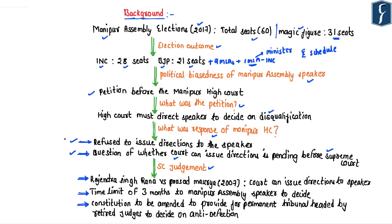Before the Supreme Court, there were two questions: first, whether courts in India can issue directions to the Speaker on anti-defection; and second, whether the MLA who switched from INC to BJP should be disqualified. On the first question, the Supreme Court stated it had already settled this in the Rajendra Singh Rana versus Prasad Maurya case, ruling that courts can issue directions to the Speaker when there is undue delay in deciding on disqualification.